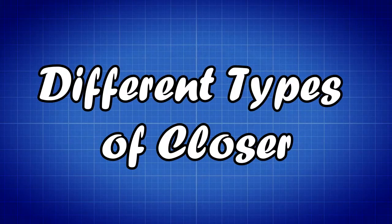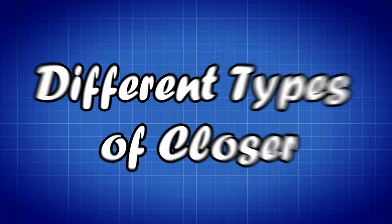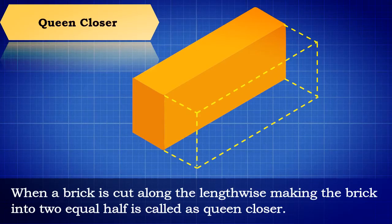Let us now discuss different types of closers. Queen Closer: When a brick is cut along the lengthwise making the brick into two equal halves is called as Queen Closer.